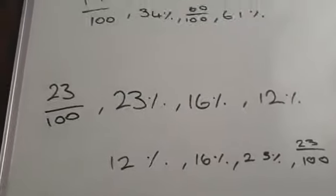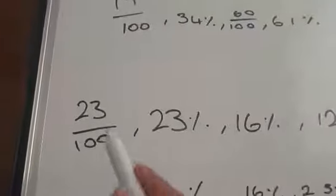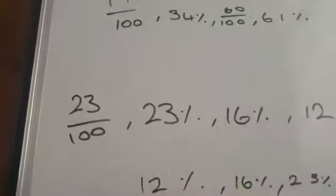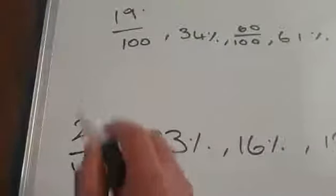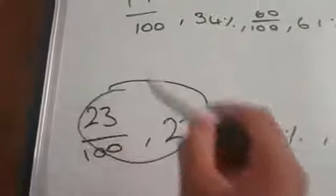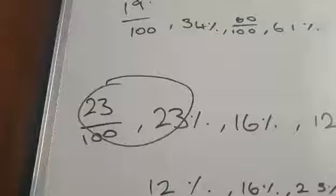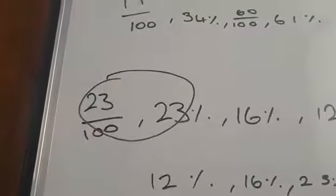Don't forget, 23 over 100 is just 23 percent. So when we see them together, they are actually the same number. Do not forget that.